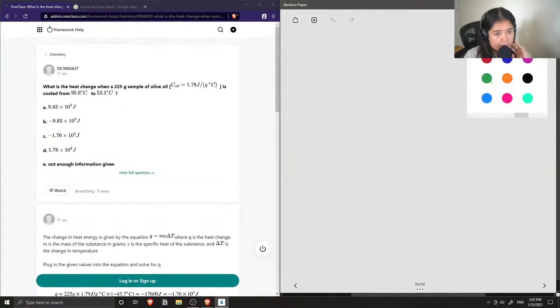Okay, so question number four. What is the heat change when a 225 gram sample of olive oil, so they have the specific heat capacity given, is cooled from 95.8 degrees Celsius to 52.1 degrees Celsius? And then we have multiple choice.